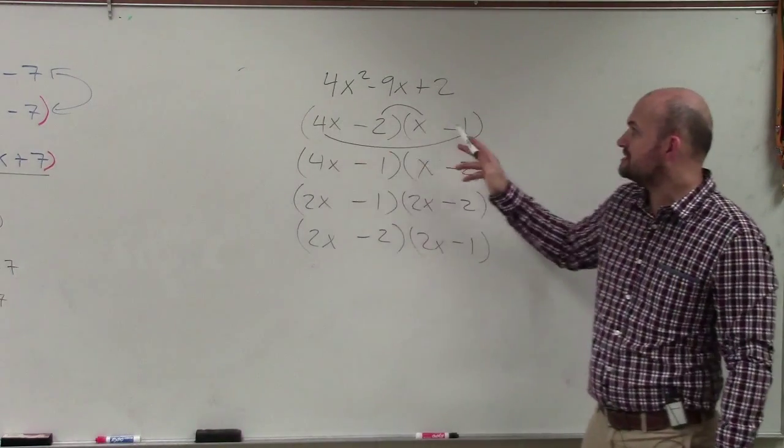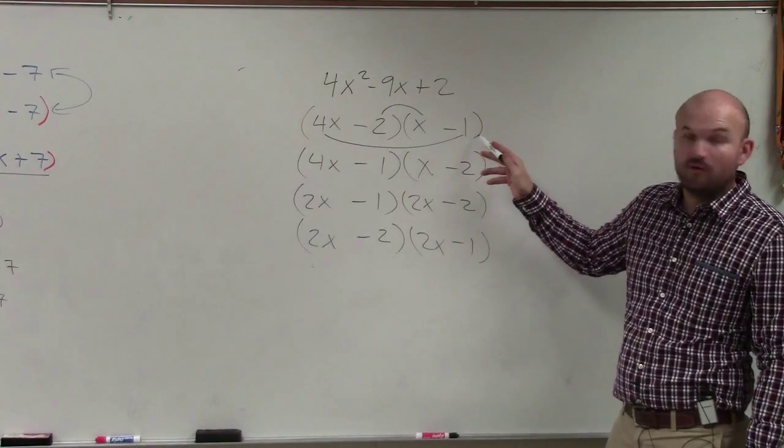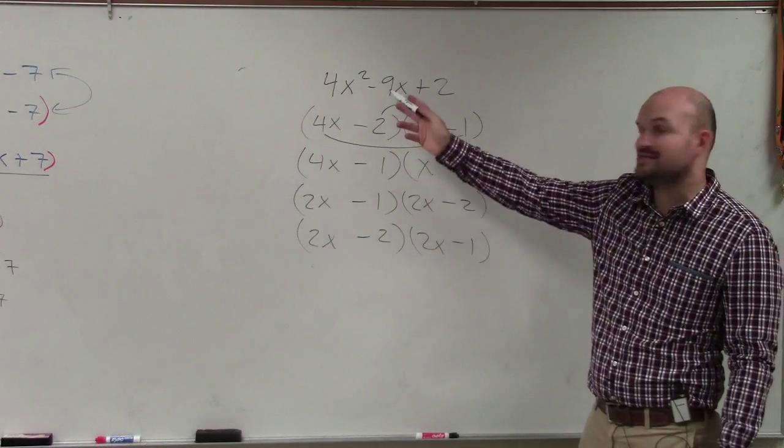So you can see this one - 4x times negative 1 is negative 4x, minus 2x is negative 6x. That doesn't work.